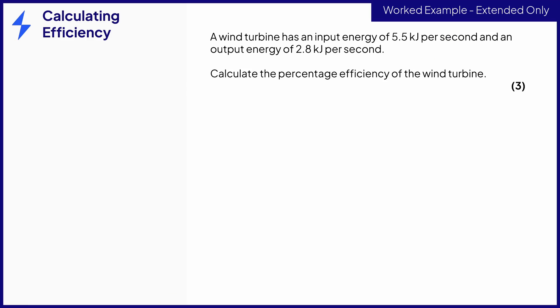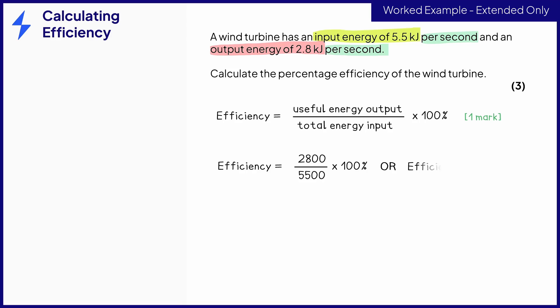Here's an example of a calculation question. A wind turbine has an input energy of 5.5 kilojoules per second and an output energy of 2.8 kilojoules per second. Calculate the efficiency of the wind turbine for three marks. Notice here that the energy values are given per second. Power is energy transferred per unit time. Therefore we could use power or energy to calculate efficiency here. So we write out the equation for one mark and we substitute in the known values.